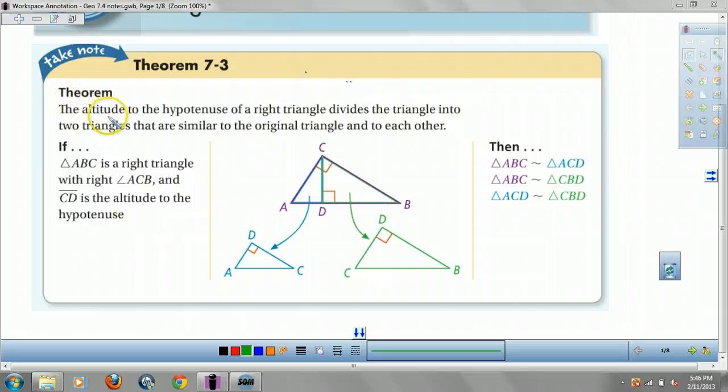Theorem 7-3. If the altitude to the hypotenuse of a right triangle divides the triangle into two triangles, they are similar to the original triangle and to each other. If you get one of these with the right angle's altitude, you have three similar triangles.